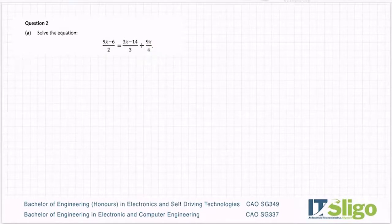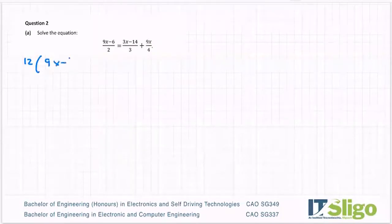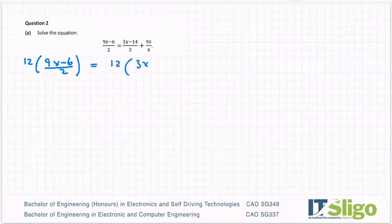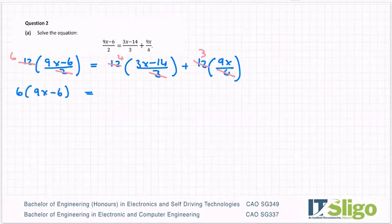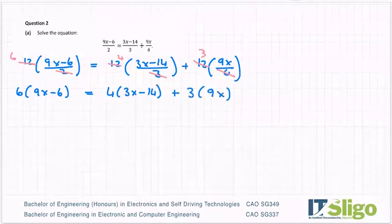One way that's taught is that you multiply 12 by 9x minus 6 over 2 and that's equal to 12 times 3x minus 14 over 3 plus 12 times 9x over 4. So 2 goes into 12 six times, 3 goes into 12 four times, 4 goes into 12 three times. And now you see why it had to all divide into the same number. So you end up with 6 times 9x minus 6 being equal to 4 times 3x minus 14 plus 3 times 9x.